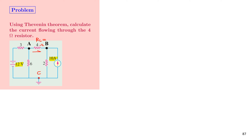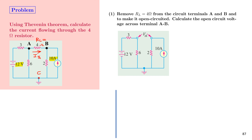The load resistor RL is the 4 ohm resistor between A and B, and we need to find the current Ith through it. The first step is to remove the load resistor from the output terminals A and B, making them open-circuited. The voltage appearing across terminals A and B is the Thevenin voltage VTH, which we find first.